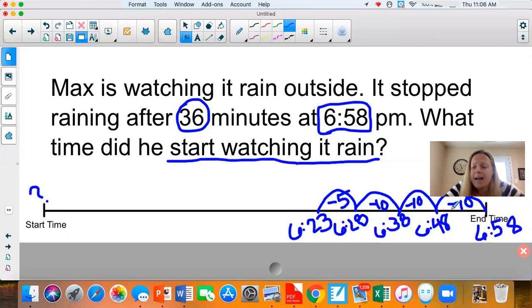And so now I have 10, 20, 30, 35. Problem says 36. So then I just need one more one minute hop. 6:23 minus one is 6:22. So I'm going to go back and add up again, just to be sure. 10, 20, 30, 35, 36. Yes, it rained for 36 minutes. So that means that the start time would be 6:22 PM.